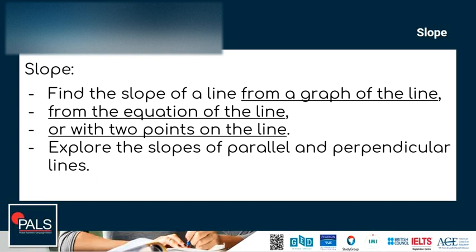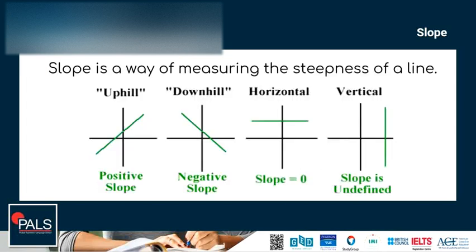Let us first define what a slope is. Slope is a way of measuring the stiffness of a line. Looking at the different graphs on the screen, you will see we have uphill, which represents positive slope; downhill, which represents negative slope; horizontal, which means the slope is zero; and vertical lines, which means the slope is undefined.